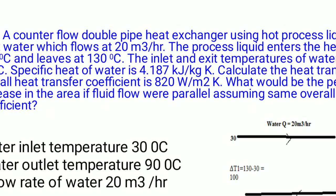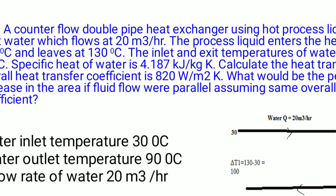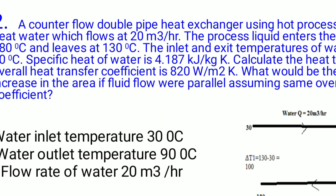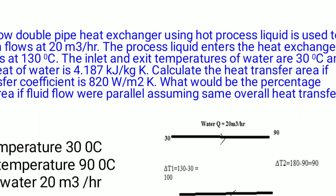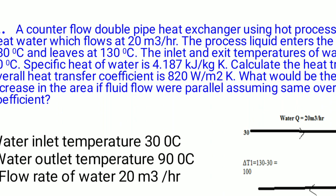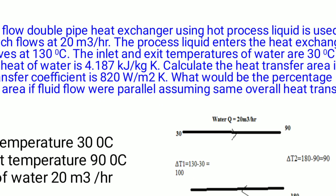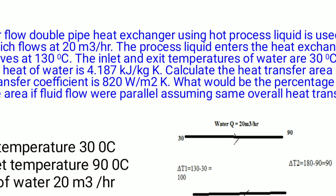Numerical 2: A counter-flow double pipe heat exchanger uses a hot process liquid to heat water flowing at 20 m³/hr. The process liquid enters at 180°C and leaves at 130°C. Inlet and exit temperatures of water are 30°C and 90°C. Specific heat of water is 4.18 kJ/kg·K. Calculate the heat transfer area if the overall heat transfer coefficient U is 820 W/m²·K.